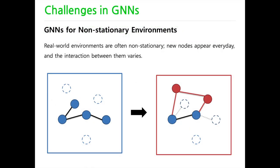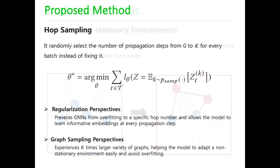This paper tackles the challenge in graph neural networks for non-stationary environments. Real-world environments evolve over time. New nodes appear every day, and the interaction between them varies. Thus, a flexible graph learning scheme that does not overfit to training graphs is needed.